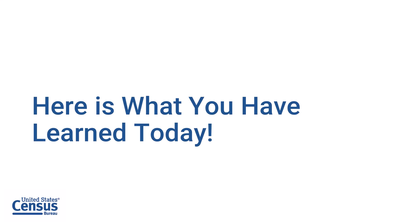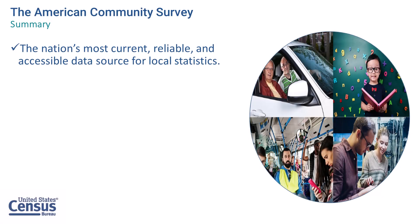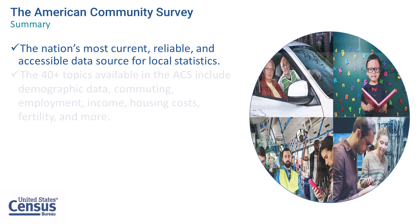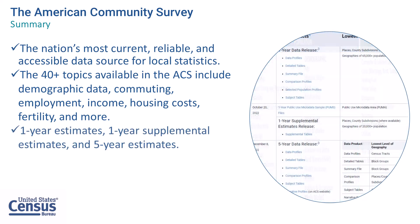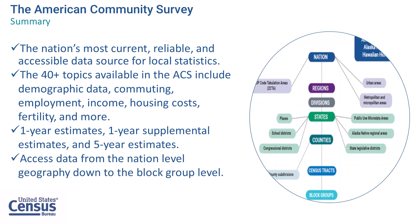Here is what you've learned today. You've learned that the ACS is the nation's most current, reliable, and accessible data source for local statistics. That the 40-plus topics available in the ACS include demographic data, commuting, employment, income, housing costs, fertility, and more. The ACS releases one-year estimates, one-year supplemental estimates, and five-year estimates. And that you can access data from the nation-level geography down to the block group-level geography.